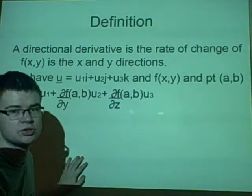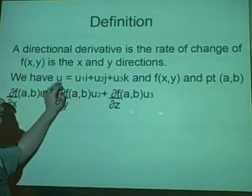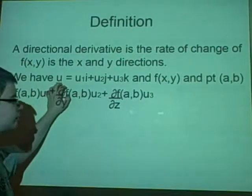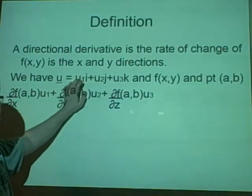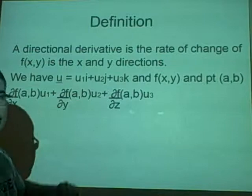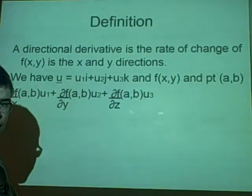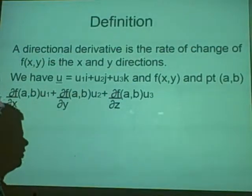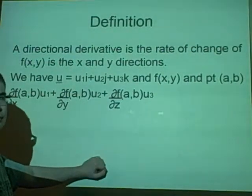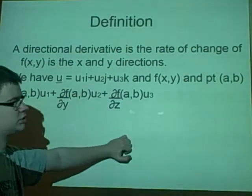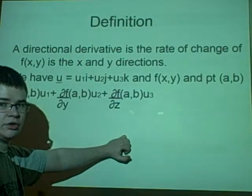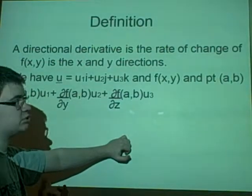In the question, you'll be given u, which would be a direction, which in our case is u1i plus u2j plus u3k, and you'll be given a function, which is our f of xy, and you'll be given a point ab, so it could be the point 23, so you're finding how steep it is at the point 23.